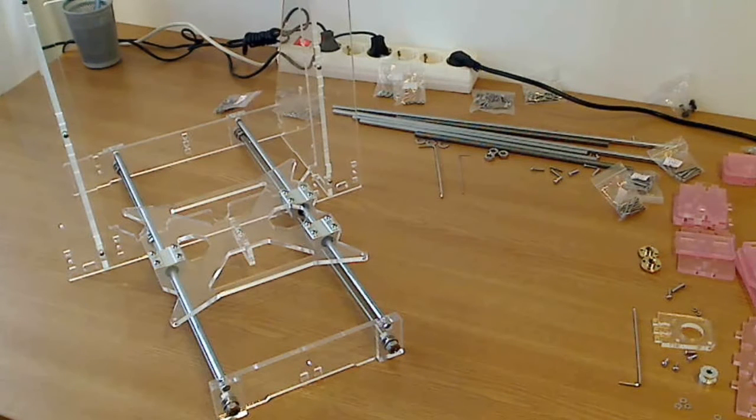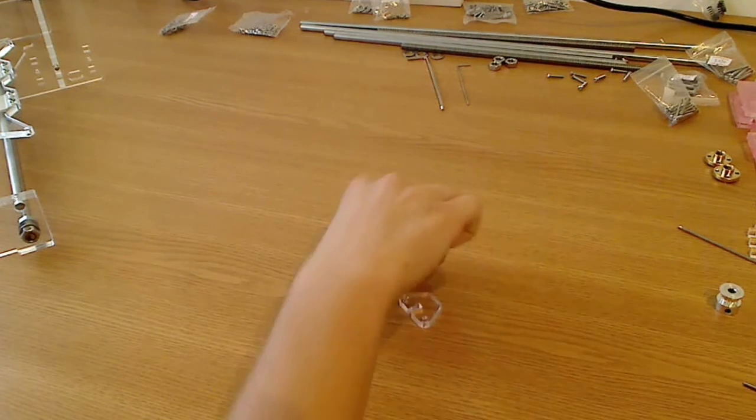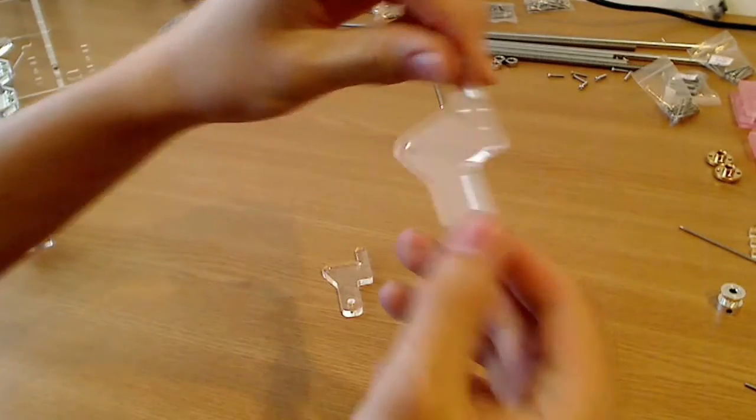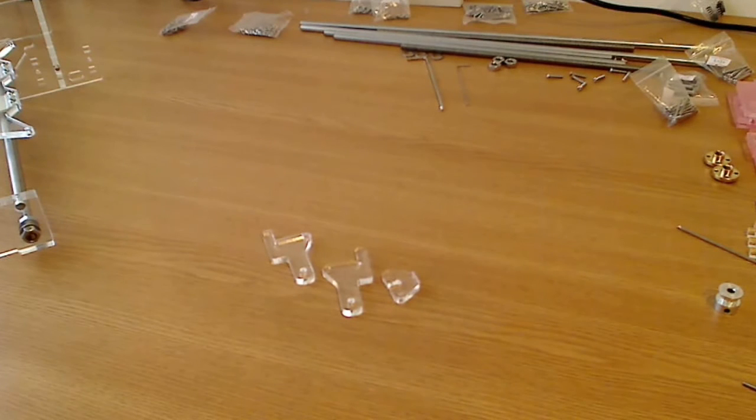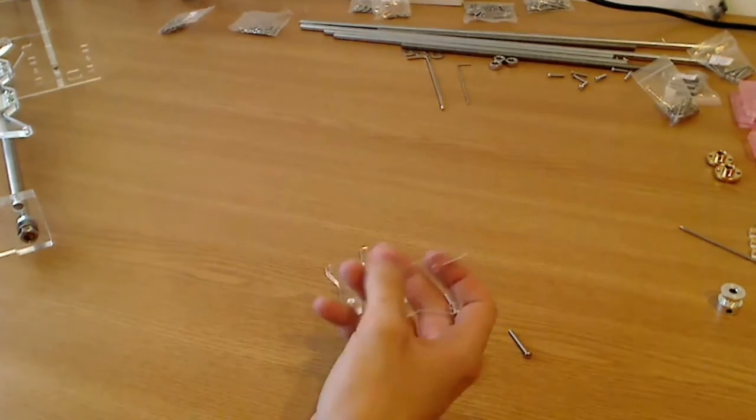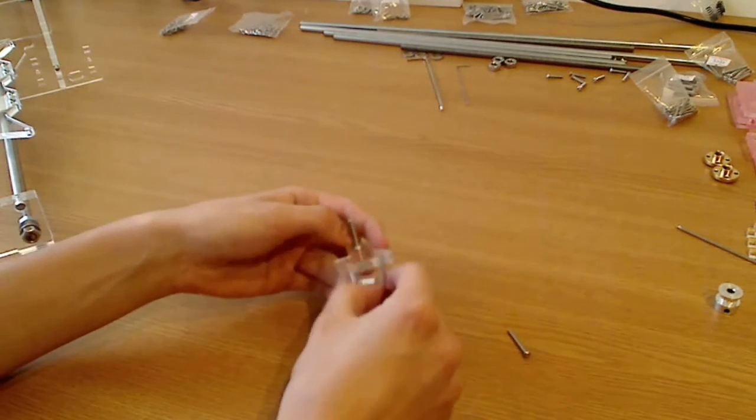We'll start with the tensioner. For the tensioner we'll need 3 acrylic parts: 2 of these, 1 of these, 1 M5 25mm screw and 2 M3 25mm screws. This is just for the beginning. Now we'll take 1 of these and put the big screw to the big hole and the other 2 screws to the little holes.